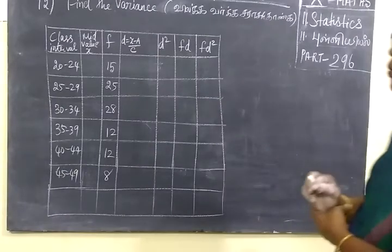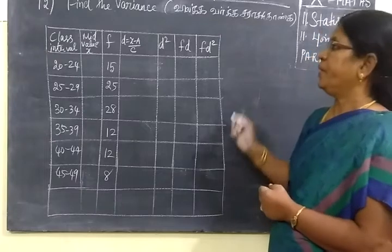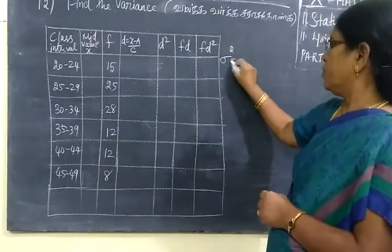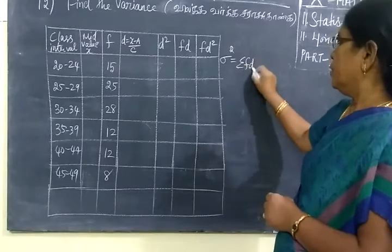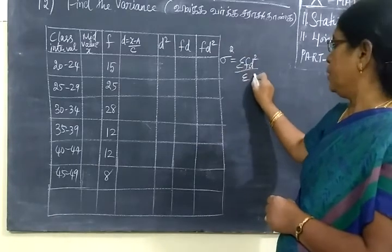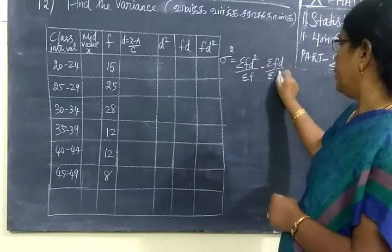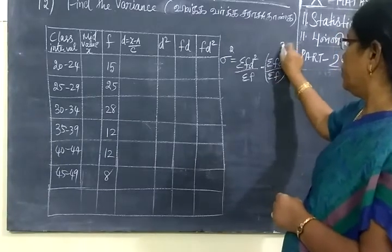So now we see for this problem, we are finding the variance. The variance formula is sigma square equals sigma FD square by sigma F minus sigma FD by sigma F whole square.